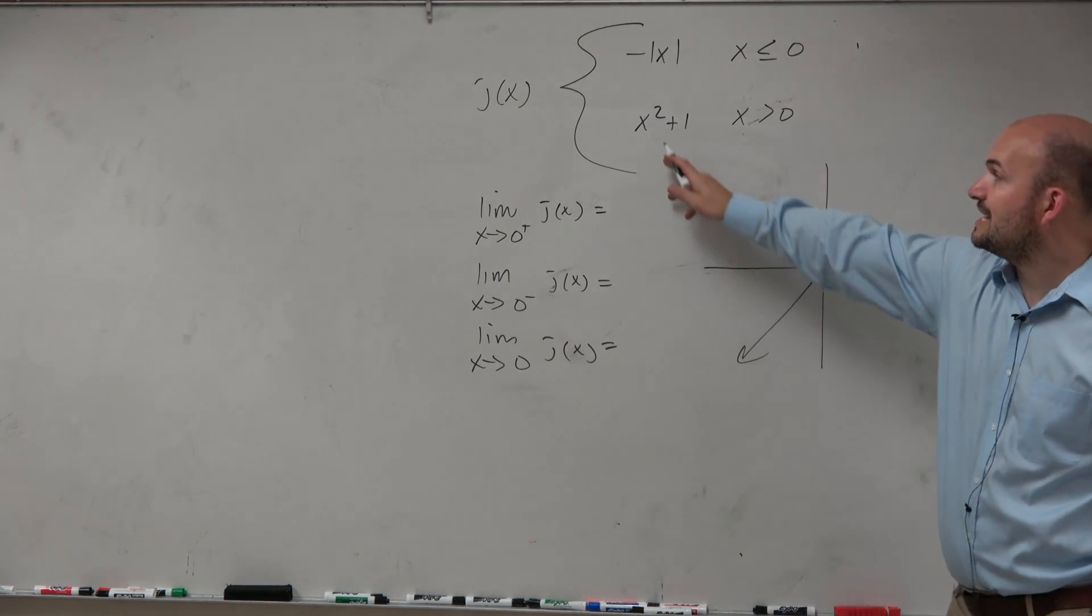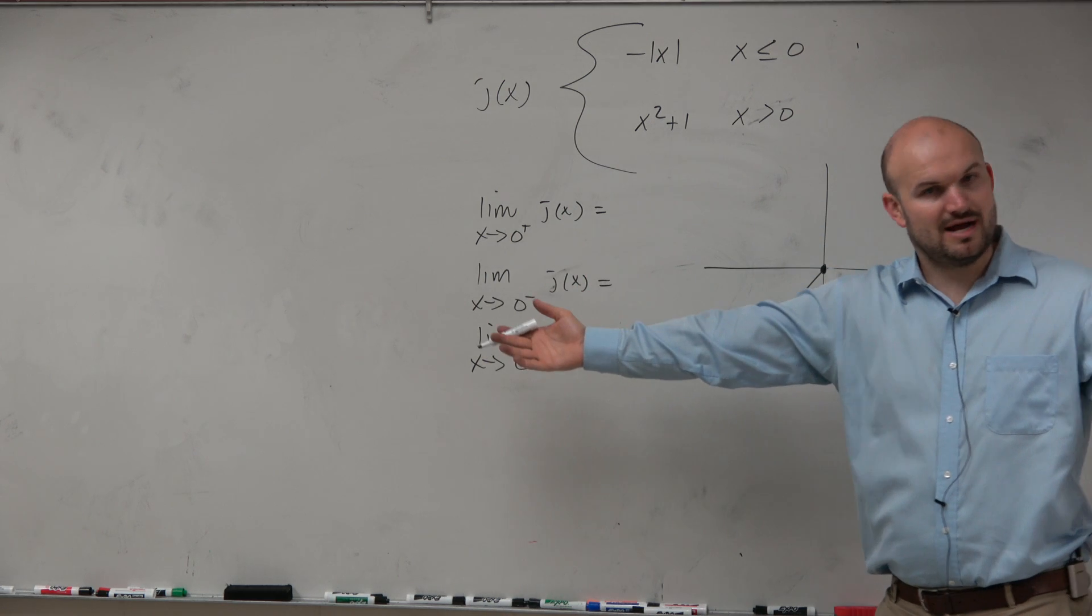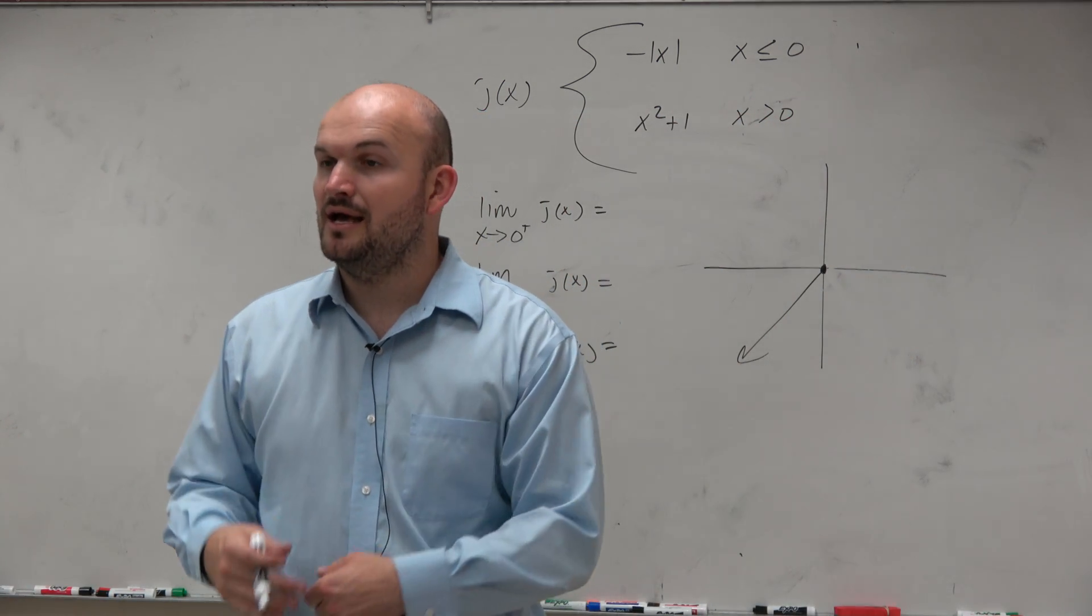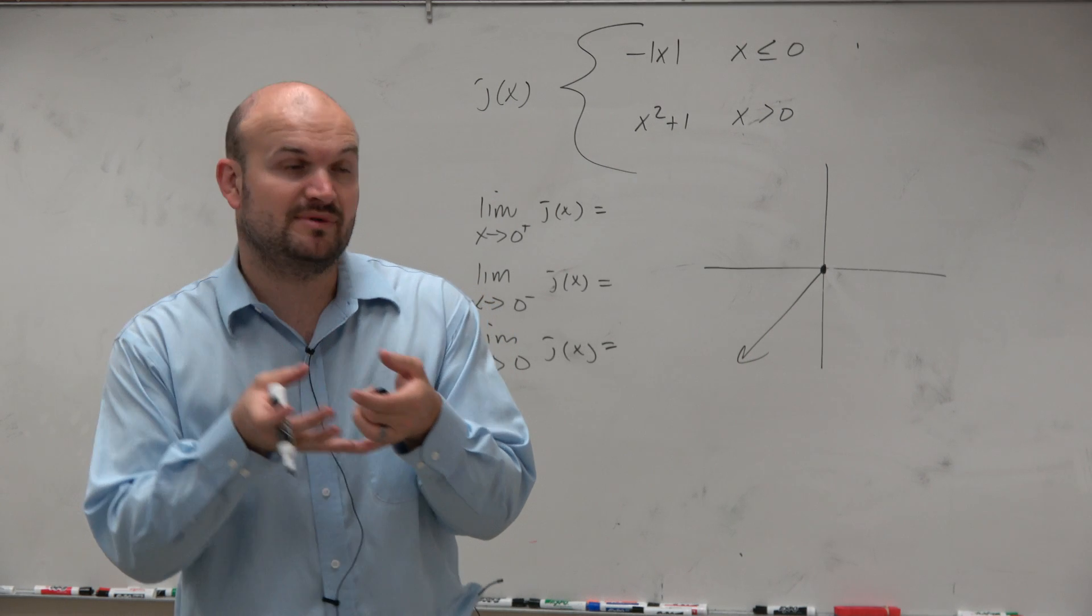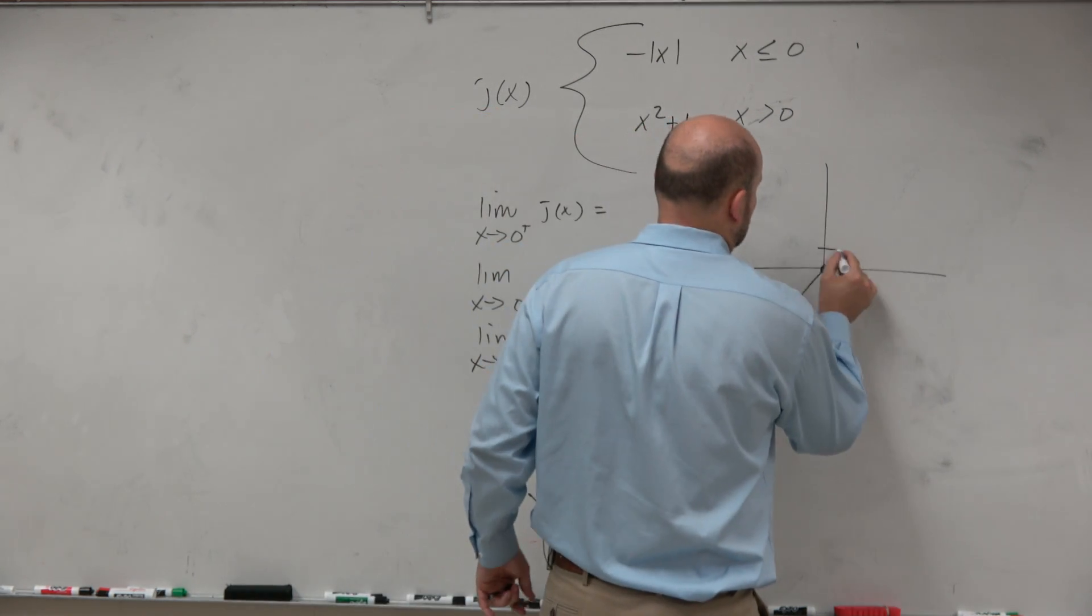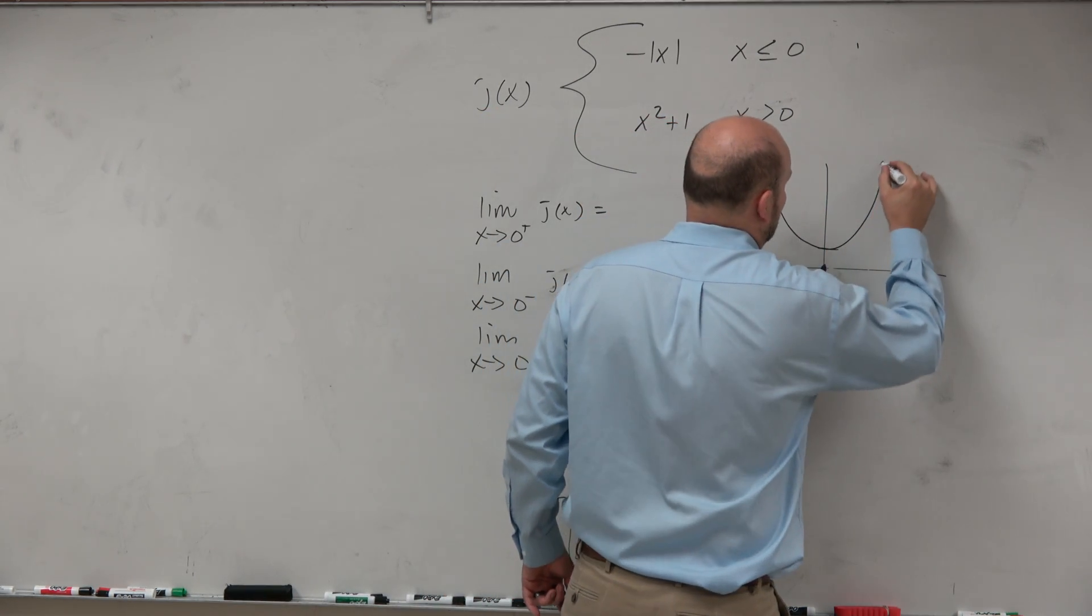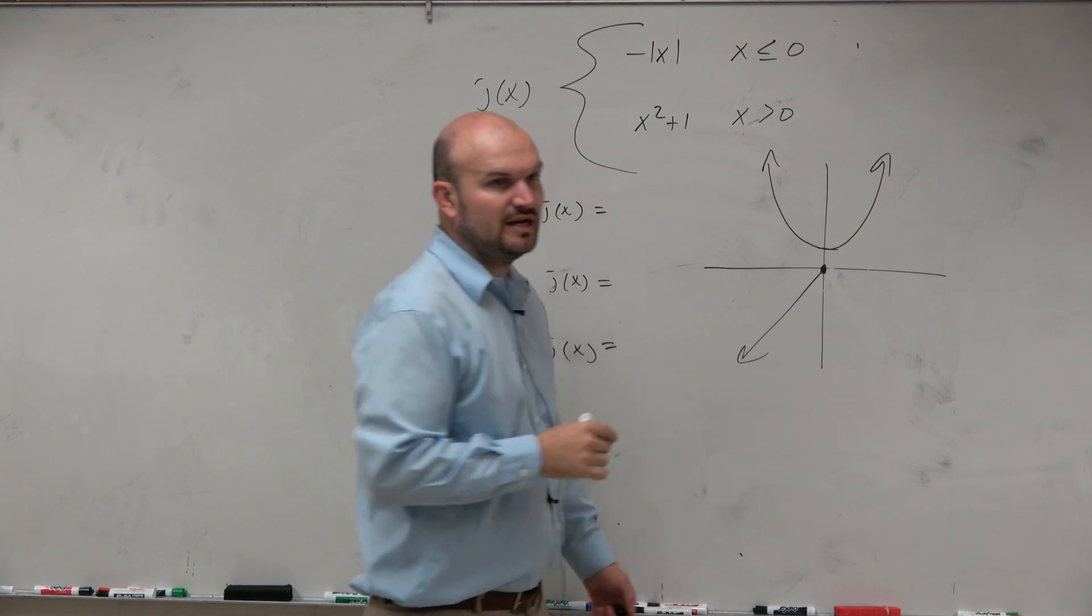The next one, x squared plus 1. That's a quadratic, right? You guys have been doing this since algebra 1, quadratics. And we have x squared plus 1. That basically means you're taking the quadratic function, nice little parabola, but you're just shifting it up 1.